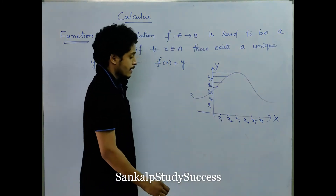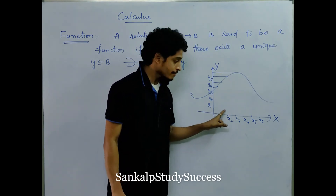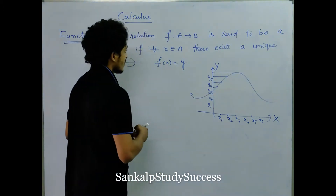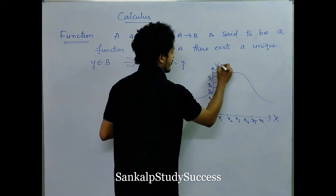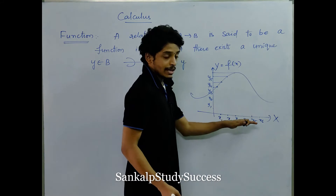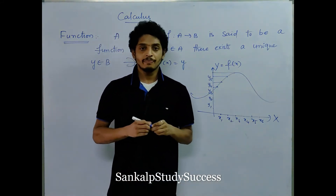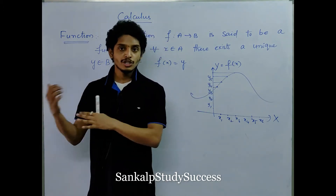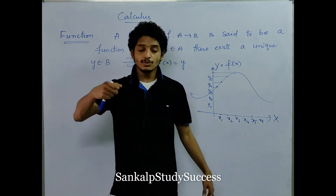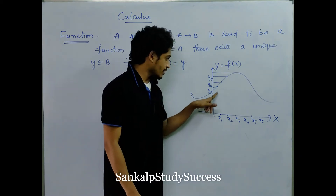That means for every x1 there are y1 values, x1, x2, there are continuous values. Simply, y is nothing but f of x. X values are input values, y values are output values. Suppose we do an experiment — if we have a particular input, we can calculate the output. If we have the input we represent the x axis, if we have the output we represent the y axis. If we have x1 input, we have y4 output.